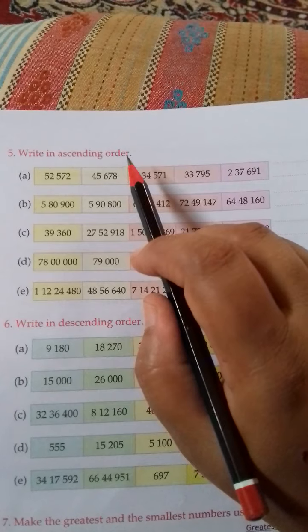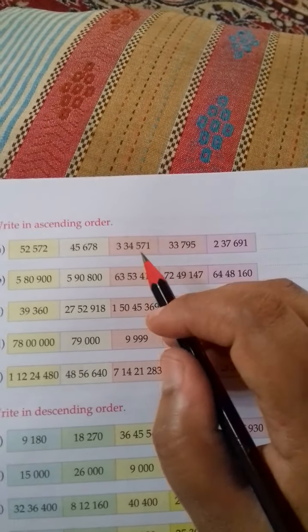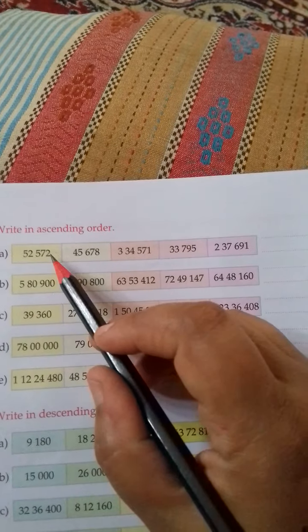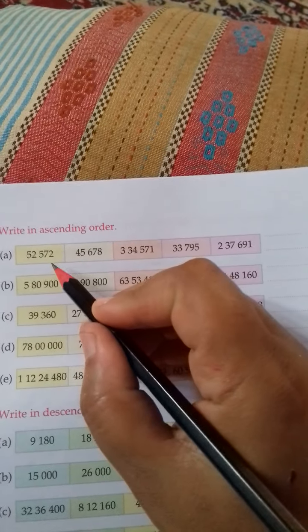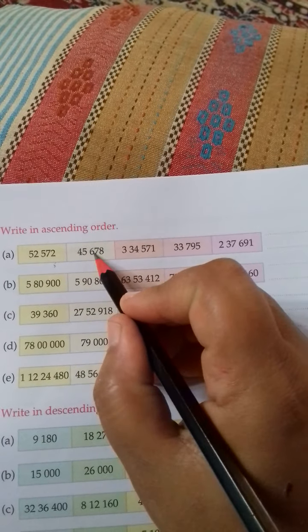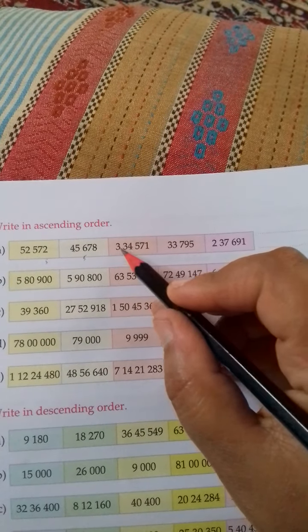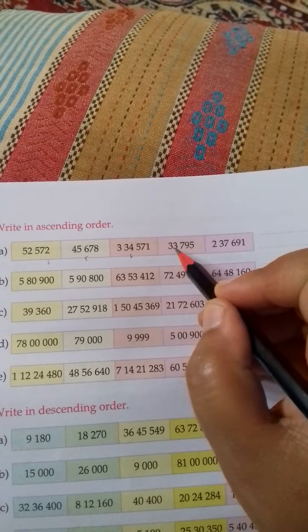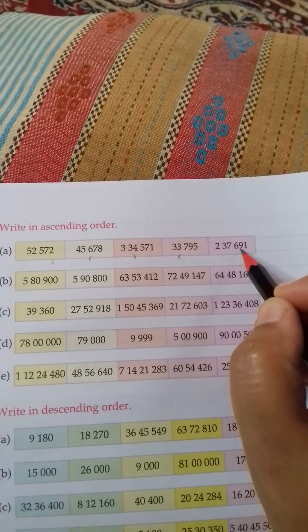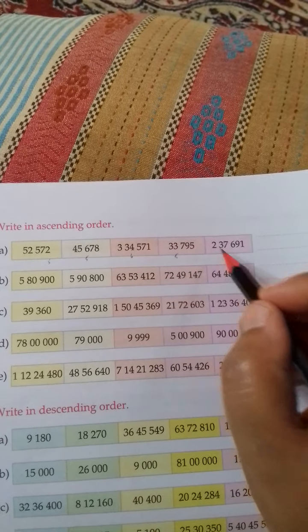Write in ascending order. Now children, yesterday I told you one method. First you count the digits. The numbers have 5 digits, then 5 digits, then 6 digits, then 5 digits, and 6 digits.